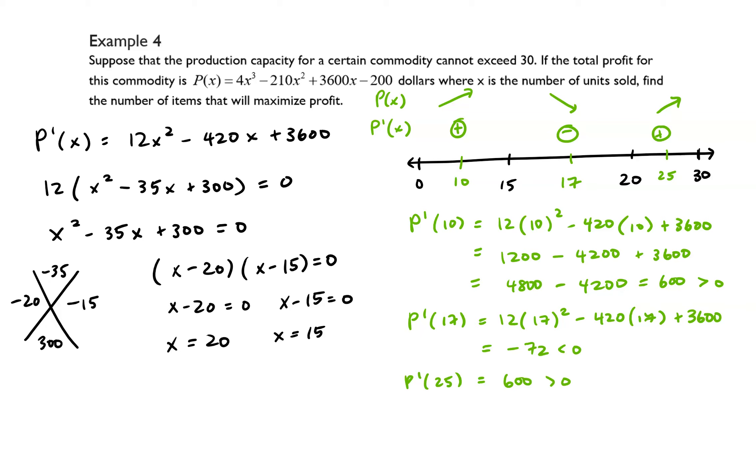So that means that we have a relative minimum when x equals 20 and we have a relative maximum when x equals 15. So potentially our answer could be x equals 15. However, we do need to check the endpoints, so let's go ahead and do that.